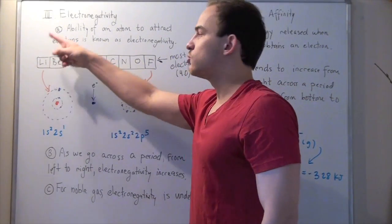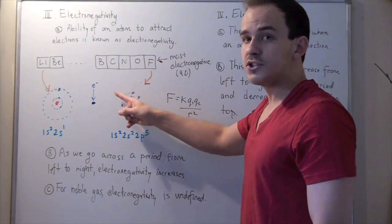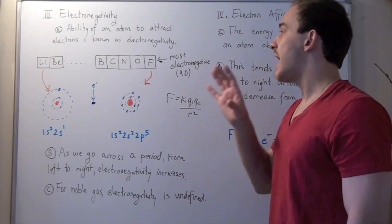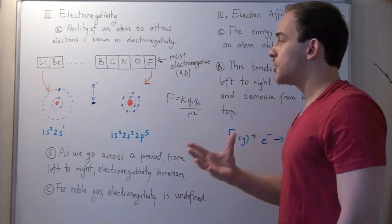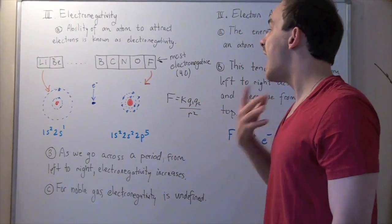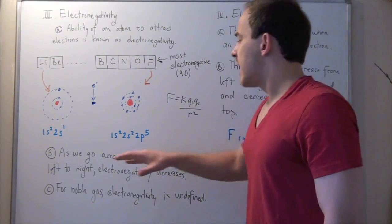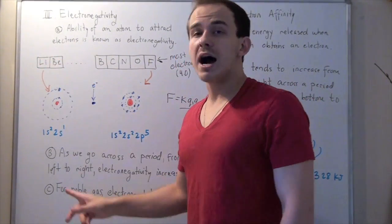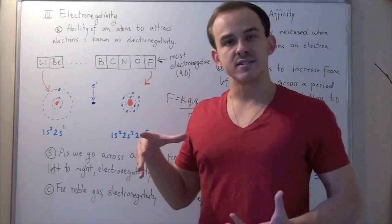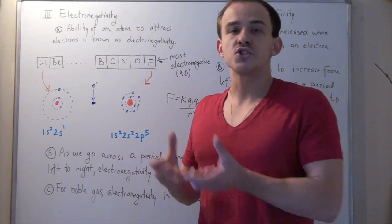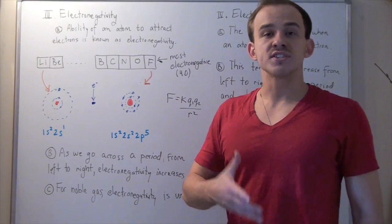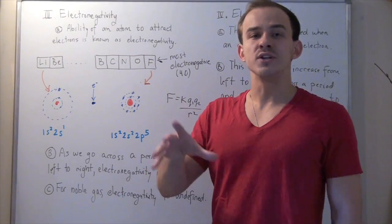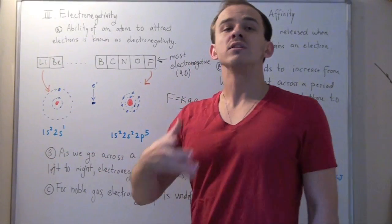As we go from lithium to beryllium to boron to carbon to nitrogen to oxygen to fluorine, our electronegativity increases. In fact, fluorine is the most electronegative atom. Electronegativity is measured on the Pauling scale, with fluorine given the highest value of 4.0. As we go across the period from left to right, electronegativity increases. As we go from top to bottom, our atomic radius increases, so the force with which the protons pull the electrons decreases — because, according to Coulomb's law, force equals KQ1Q2/R², so the denominator increases, decreasing our force. Therefore, as we go from top to bottom, our electronegativity decreases.